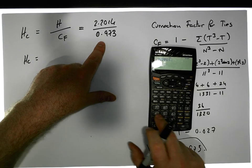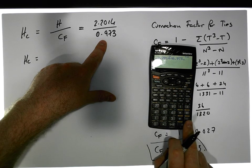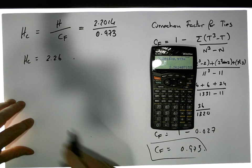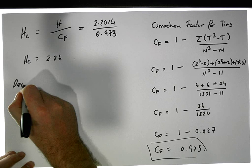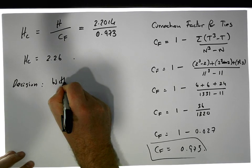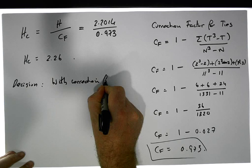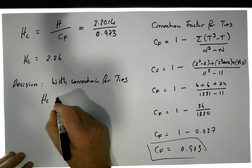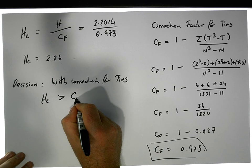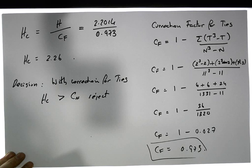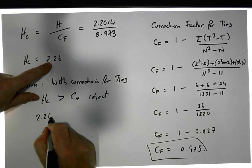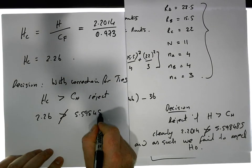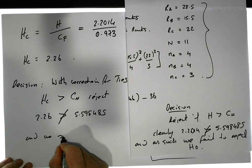So we have our corrected H equals 2.2014 divided by 0.973, giving us a value of 2.26. Now when it comes to the decision with the correction for ties, we also compare a corrected H statistic. It gets compared to the critical value. We have 2.26 is not bigger than 5.598485, and as such we still fail to reject.